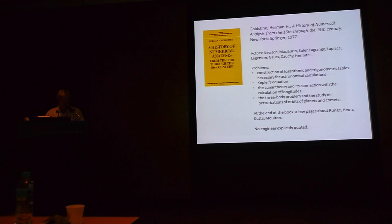And the method of least squares for finding optimal solutions of linear systems with more equations or less equations than unknowns. At the end of the book, a few pages involve Runge, Kutta, Moulton, that is to say, some characters who can be considered as being the first applied mathematicians identified as such in the late 19th century and the beginning of the 20th century.